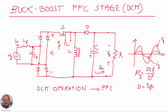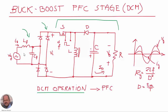We can see here at the input the line, then we have the EMI filter and rectifier, and then the buck-boost converter. We know that when this converter is operated in discontinuous conduction mode for the whole line period, the line is going to see at this point a resistance. That resistance can be calculated as two times L times f divided by d squared, where d is the duty cycle at which we are operating our converter.